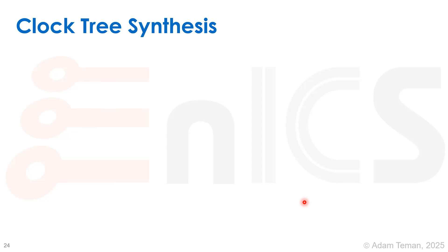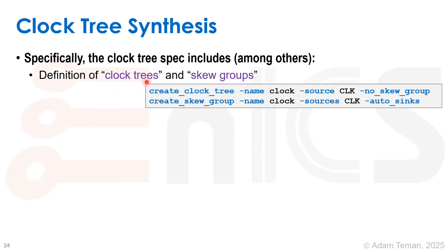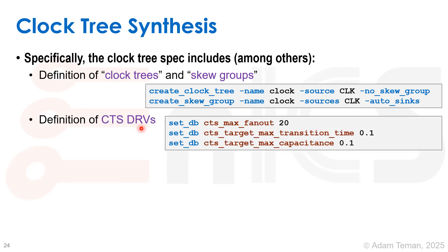The clock tree spec contains different types of things. For example, we define what are called clock trees and skew groups: we create a clock tree, give it a name (e.g., 'clock'), say what the source is, and either let it automatically find its sinks or use the minus_no_skew_group option followed by create_skew_group — giving the skew group a name, defining the source, and enabling auto_sinks. This creates one clock tree entity and one skew group entity with basically the same sinks. That's the basic definition.